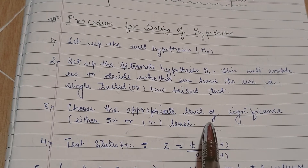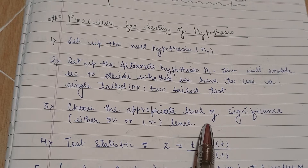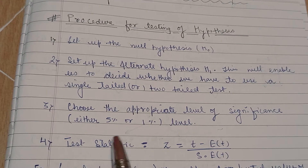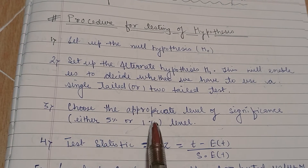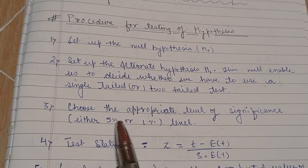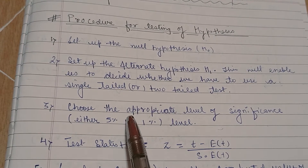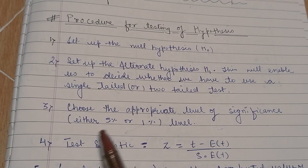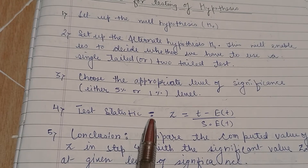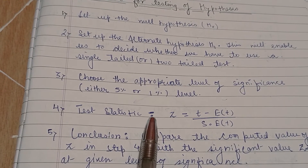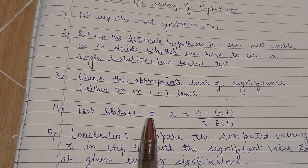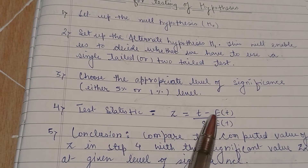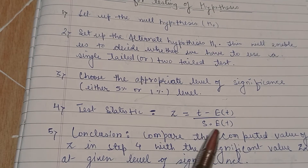The level of significance will be mentioned in the question, but in case it is not mentioned, you can choose either, though five percent is preferred — your teacher might tell you what to choose. Next, step four is test statistics, which is the main step. In this module the test statistic is z, where z equals (sample statistic t minus expected value of t) divided by (standard error of t).